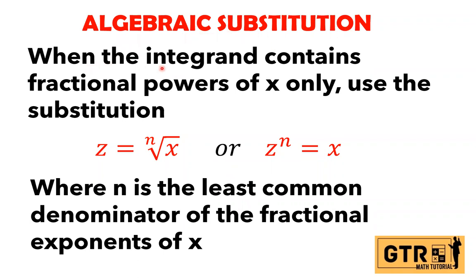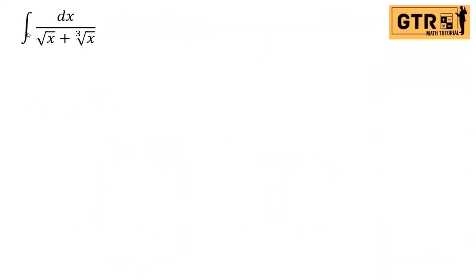When the integrand contains fractional powers of x only, use the substitution z equals the n-th root of x, or z to the n equals x, where n is the least common denominator of the fractional exponents of x. Example: we have the integral of dx over square root of x plus cube root of x.